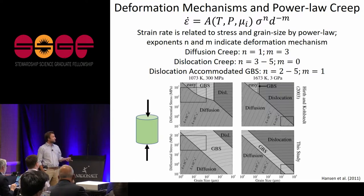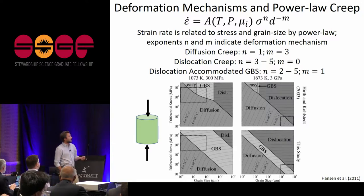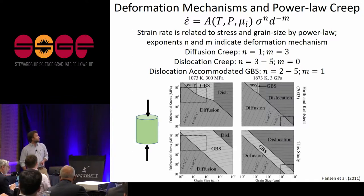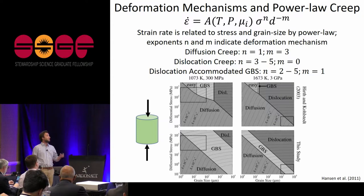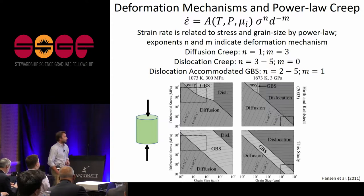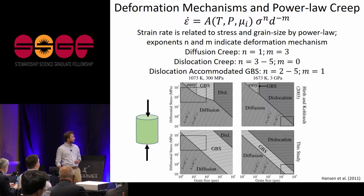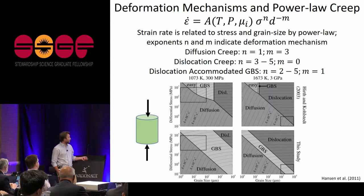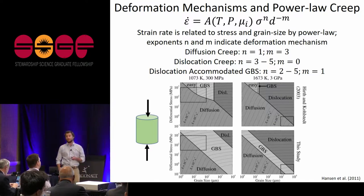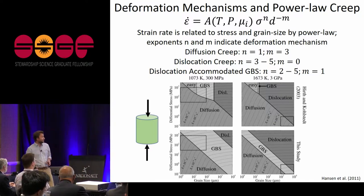Stress and grain size dependence are important for understanding flow. The different mechanisms discussed are diffusion creep, with a linear stress dependence and nonlinear grain size dependence; dislocation creep, a dislocation-accommodated mechanism with nonlinear stress dependence and no grain size dependence; and dislocation-accommodated grain boundary sliding, an intermediate regime with nonlinear stress dependence and some grain size dependence. People have made flow laws and tried to map out when these regimes are important, then extrapolate to the Earth.